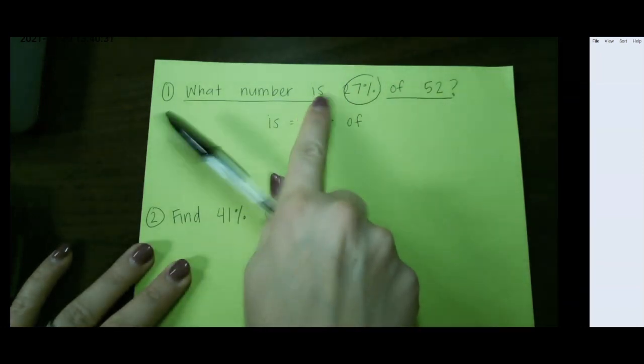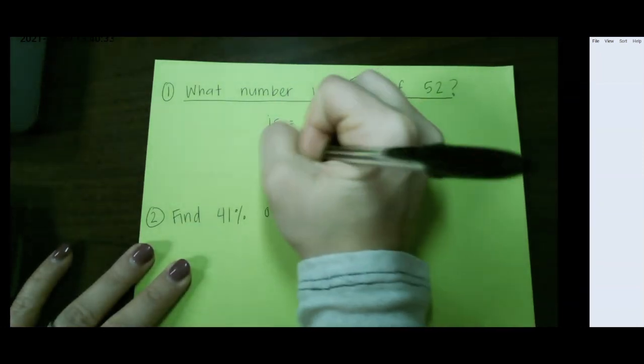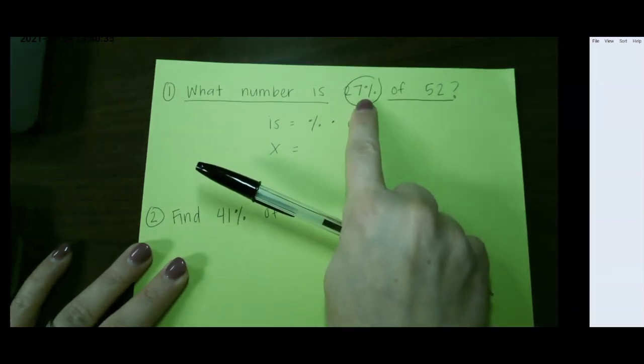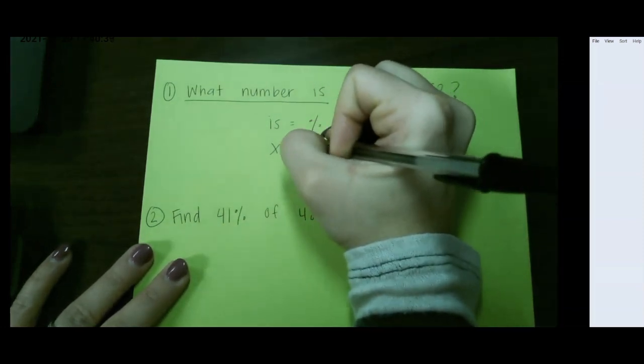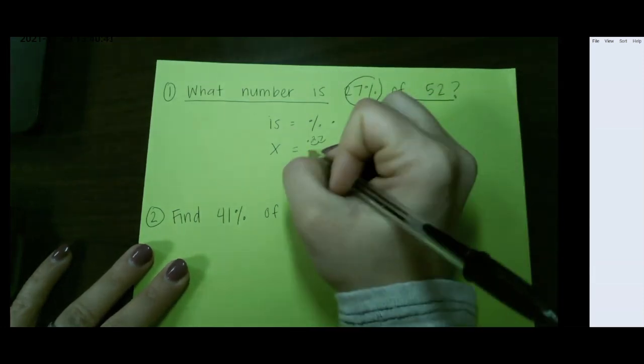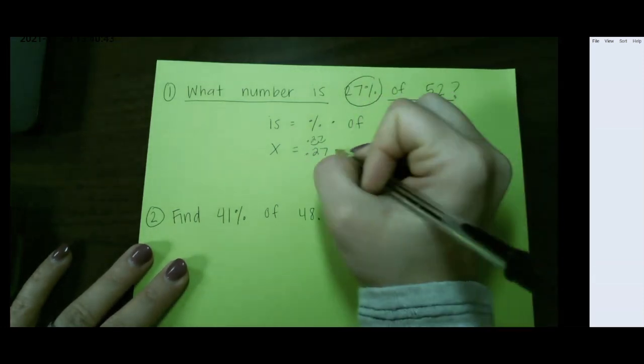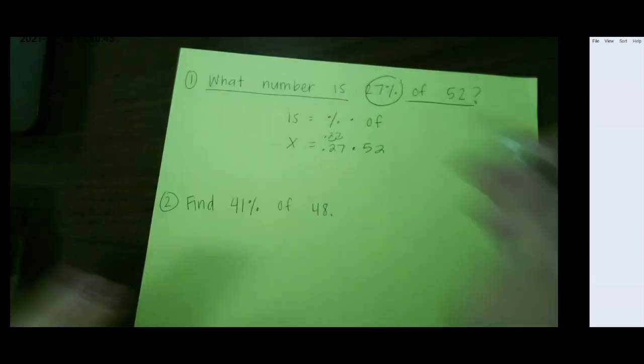It looks like we're missing our is number, so that would be our x. Our percent needs to be written as a decimal. Remember, 27%, we move the decimal two places to the left. So that would be 0.27 times 52.